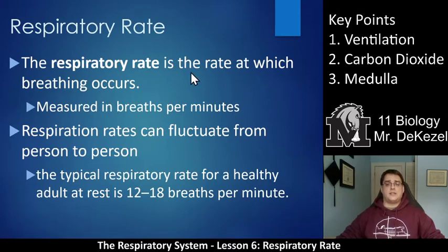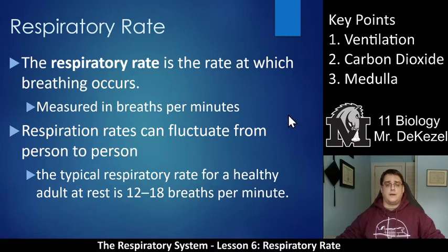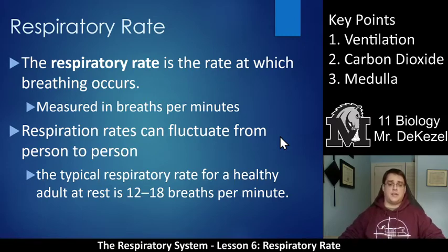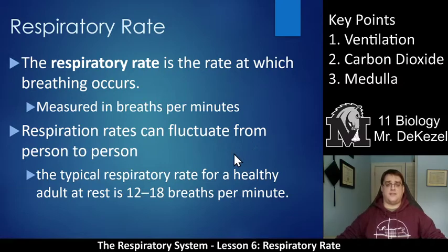The respiratory rate is the rate at which breathing occurs — it's your breathing rate. It's measured usually in breaths per minute. These rates can fluctuate from person to person depending on how fit they are, if they are sick or not, or if you've been sleeping or exercising. But generally, the typical respiratory rate for a healthy adult is between 12 and 18 breaths per minute — so roughly four to five seconds per breath. It's not very fast-paced; it's at rest.